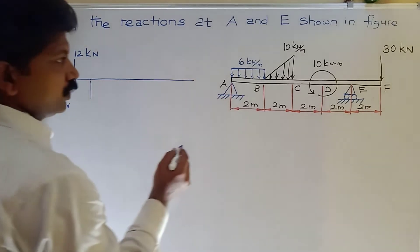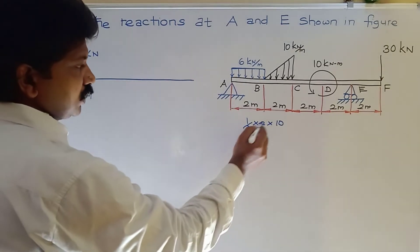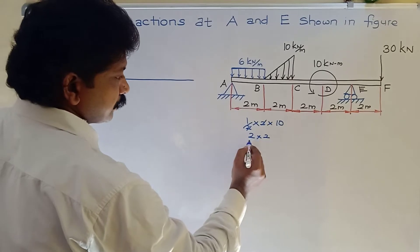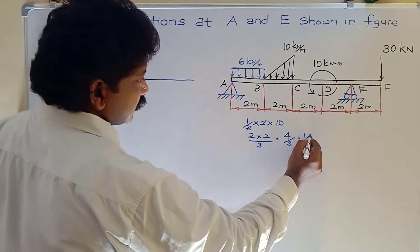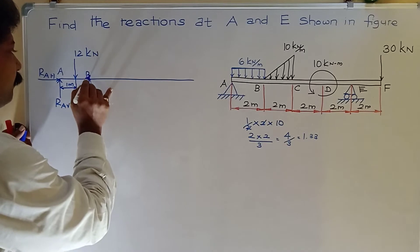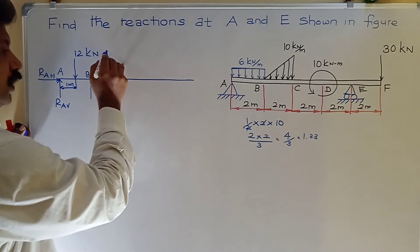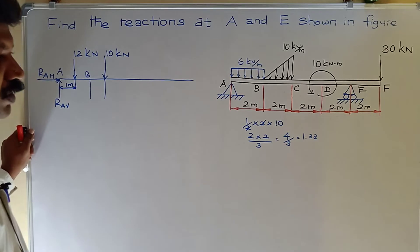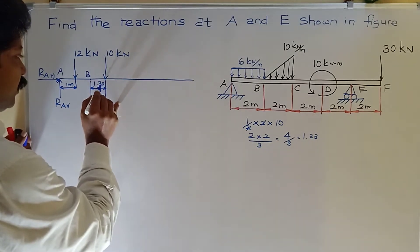For the UVL, convert it into a point load. Total load equals half times base distance times maximum load, so 10 kN. The position is at two-thirds of the distance from the least load end, which is 4 divided by 3 = 1.33 meters from point B. So 10 kN acts at 1.33 meters from point B.